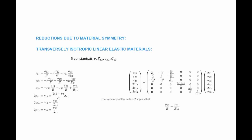The relationship is described as: epsilon_11 equals sigma_11 over E minus Poisson's ratio times sigma_22 over E, minus nu_31 times sigma_33 over E_33. Similarly, epsilon_22 equals negative nu times sigma_11 over E plus sigma_22 over E minus nu_31 times sigma_33 over E_33, and so on. This gives a matrix relationship between the strains and the stresses.